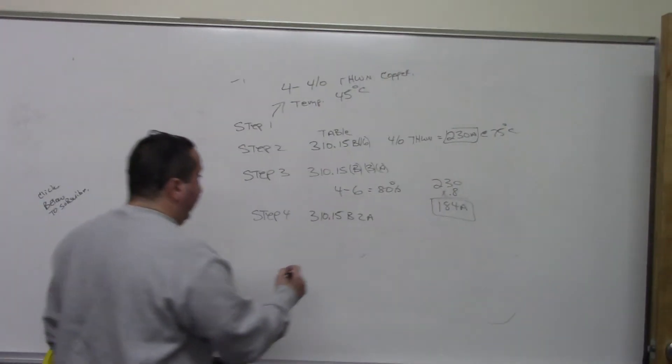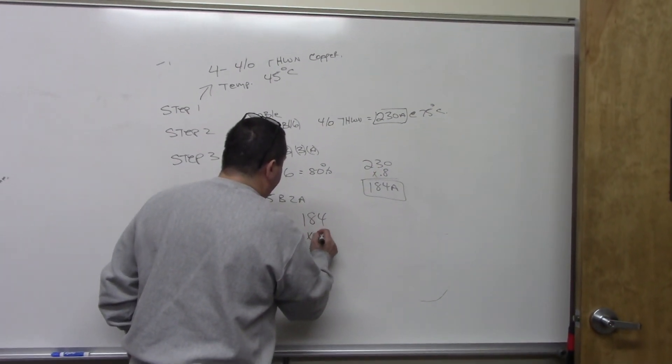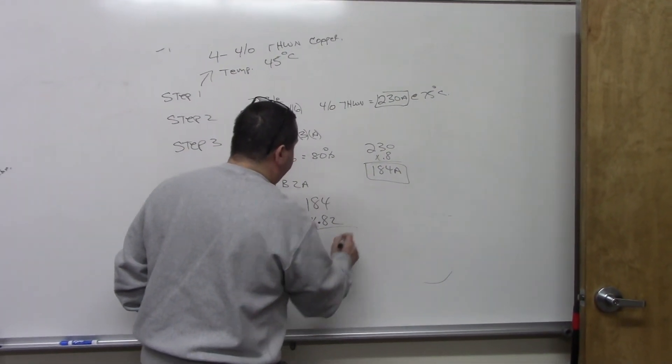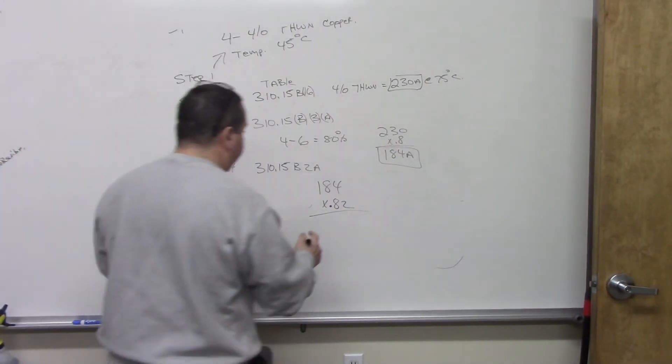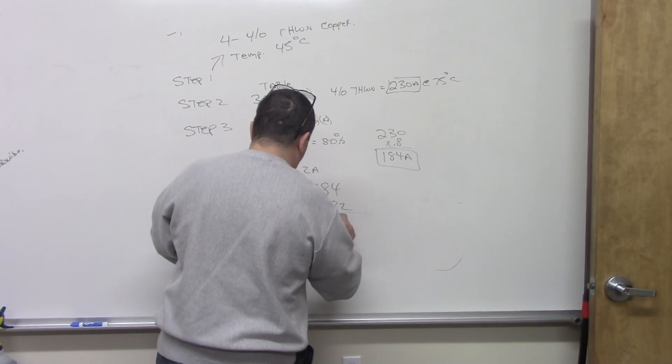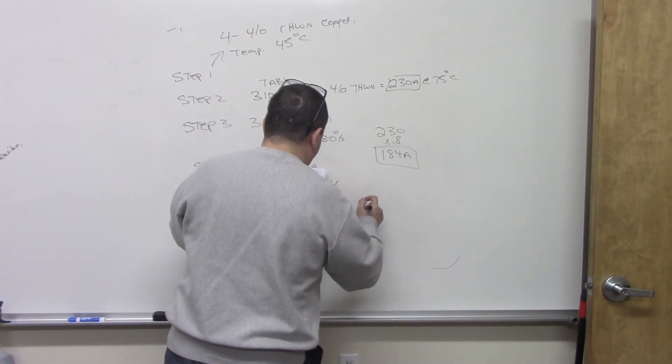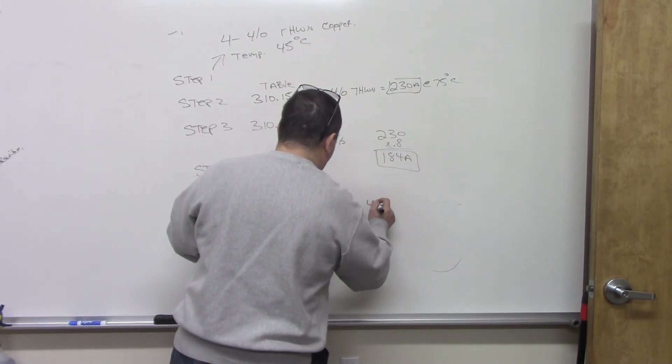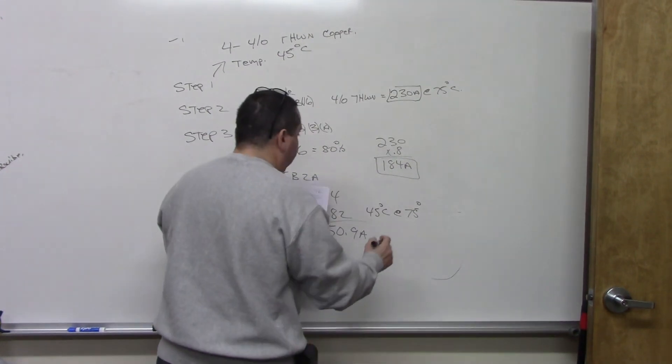So we're going to take the 184 times 0.82. When we do that, we come out with 150.9 amps. That's based on the 45 degrees Celsius at the 75 degree column.